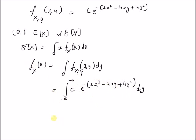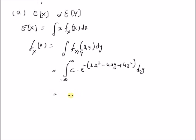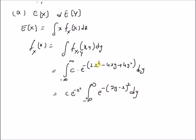This marginal PDF of x can be simplified by separating 2x² as x² plus x², giving c times e to the power of minus x². This term is independent of y, so we can take it outside, leaving the integral from minus infinity to plus infinity of e to the power of minus (2y - x)² dy. The rest of the terms form a minus b whole square, where a equals 2y and b equals x.